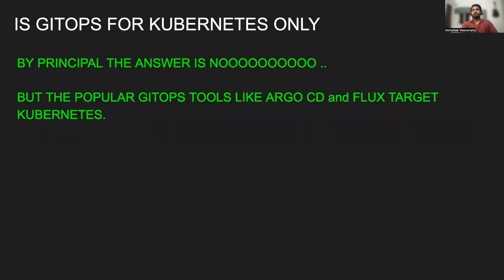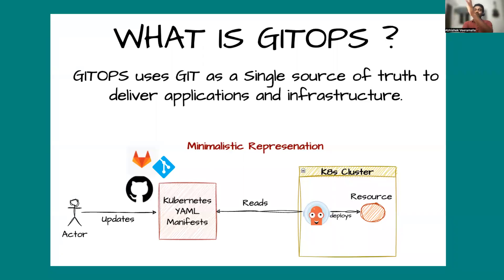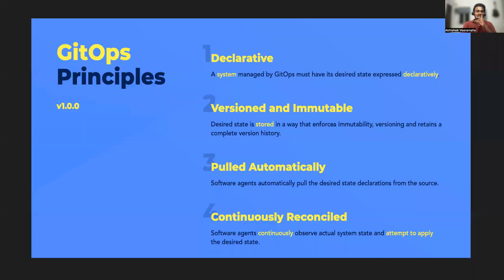Is GitOps for Kubernetes only? This is a tricky question with different answers. By principle, the answer is no — GitOps is for a lot of other things. But most of the GitOps tools we have today, whether Argo CD or Flux, target Kubernetes. The modern day GitOps tools are targeting Kubernetes clusters only — probably in the future you might have a GitOps tool for Docker Swarm or AWS infrastructure, but for now the popular GitOps controllers — Flux and Argo CD — are restricted to Kubernetes clusters.